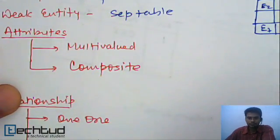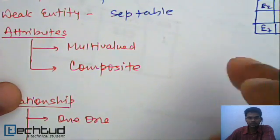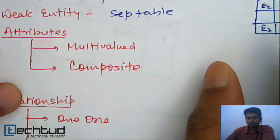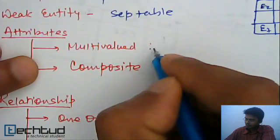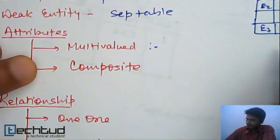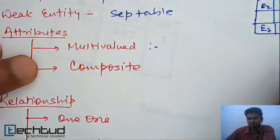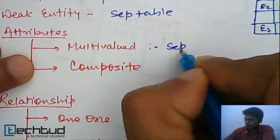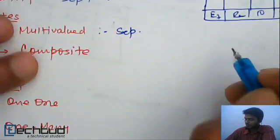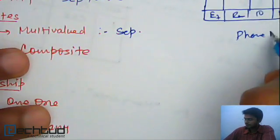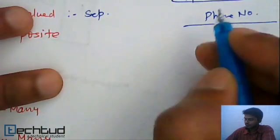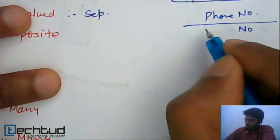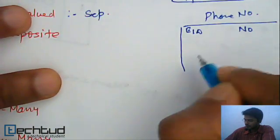For attributes: a normal attribute does not need a separate table — it is stored in the entity type's table. But if it is a multi-valued attribute, such as phone number, you cannot store it in the entity table itself. You have to create a separate table for it — for example, a phone number table.